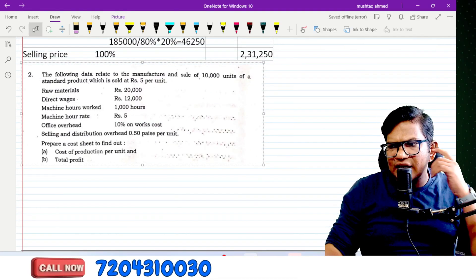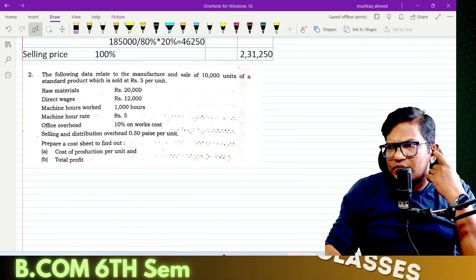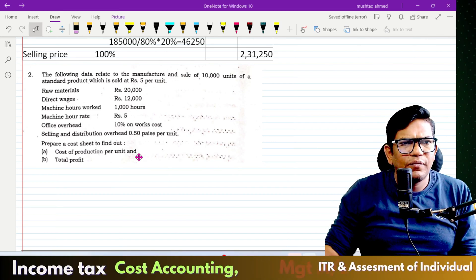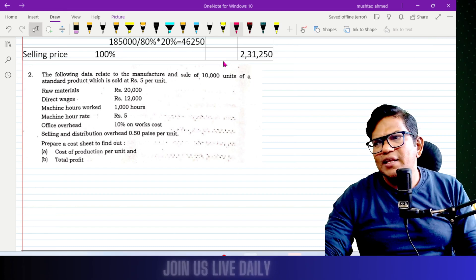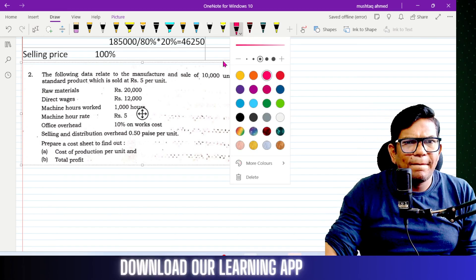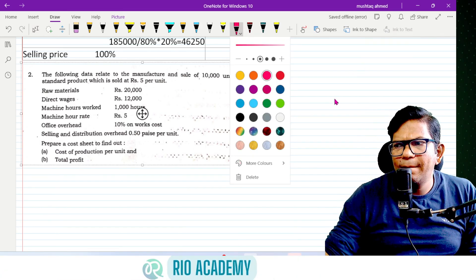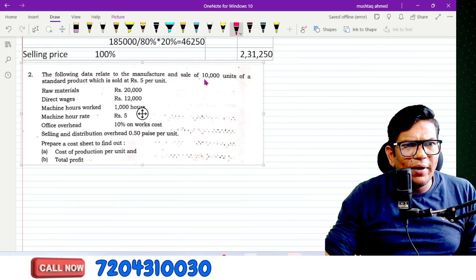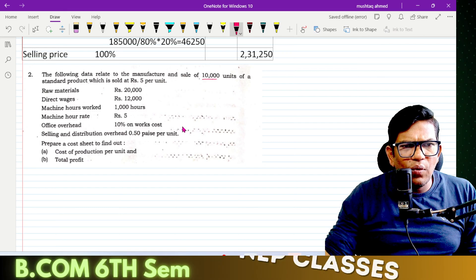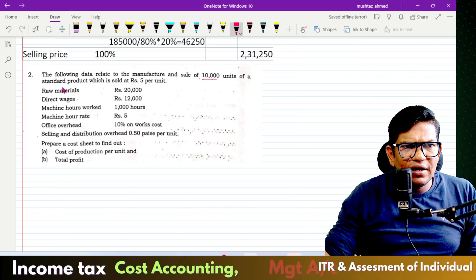This is an exam question. Do not skip this demo class. The question follows: It relates to manufacturing and sale of 10,000 units